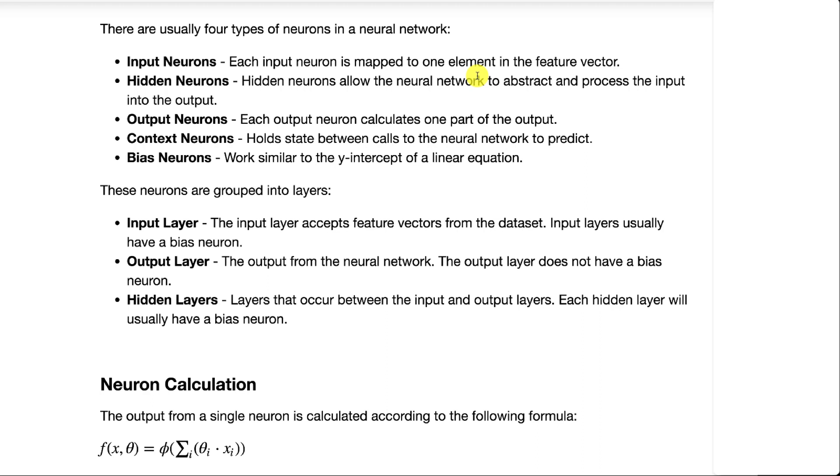And then bias neurons, they are essentially like the y-intercept in traditional mathematics, linear equations.